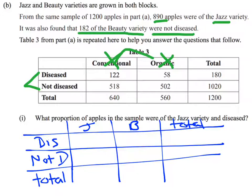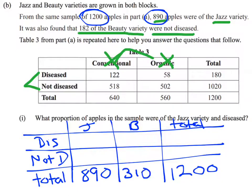We're told here that we've got the same sample of 1,200. So my total number of apples is 1,200. From that, 890 of those were Jazz apples. So my total number of Jazz apples is 890. Now the Jazz plus the Beauty has to add up to 1,200. So if I do 1,200 minus 890, that tells me there are 310 Beauty apples.